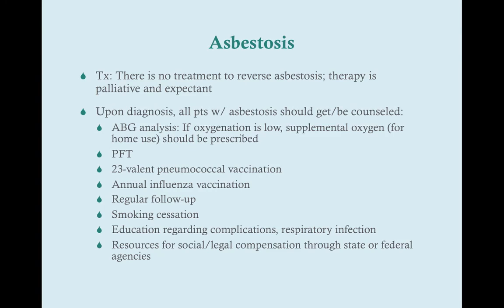Smoking should stop, particularly in patients with lung diseases like asbestosis. Education should be provided regarding complications like mesothelioma and respiratory infections. Patients should be given resources for social and legal compensation — most state and federal agencies will be able to help patients with asbestosis who were exposed on the job, entitling them to some compensation for their medical fees.